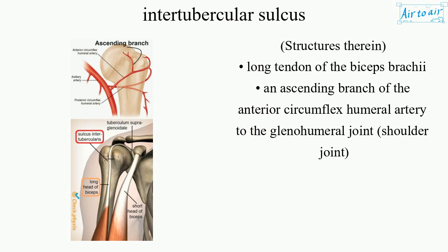Structures therein: the long tendon of the biceps brachii, and an ascending branch of the anterior circumflex humeral artery to the glenohumeral joint (shoulder joint).